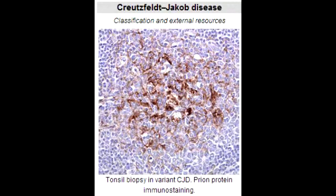Creutzfeldt-Jakob disease is a rapidly progressive dementia with myoclonus, occurring within weeks to months. Myoclonus is the spasmodic jerky contraction of a group of muscles.